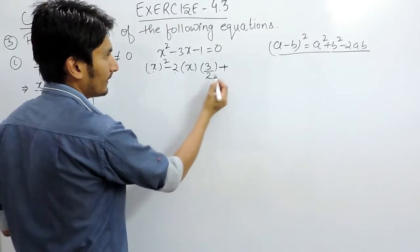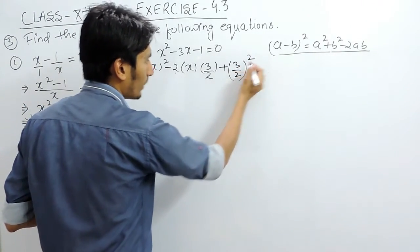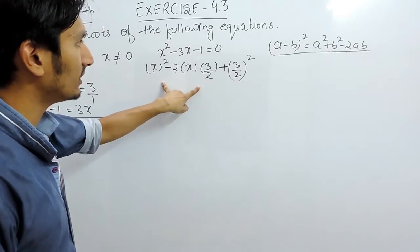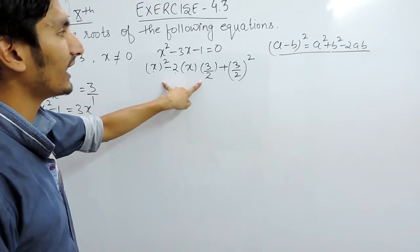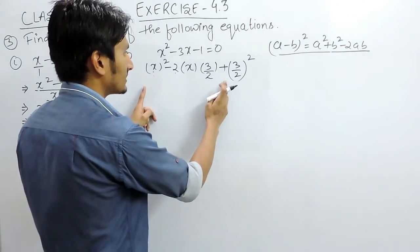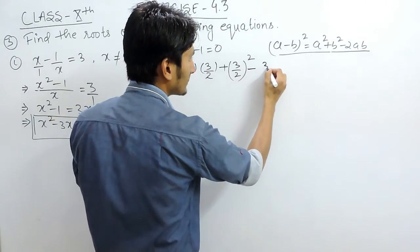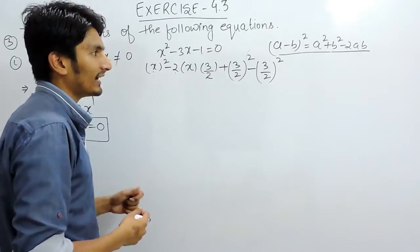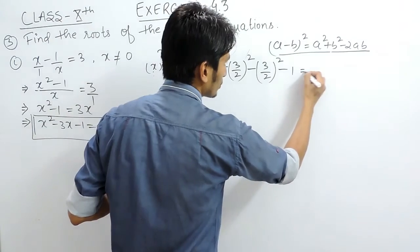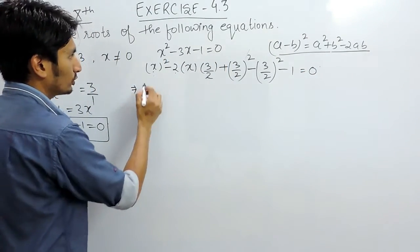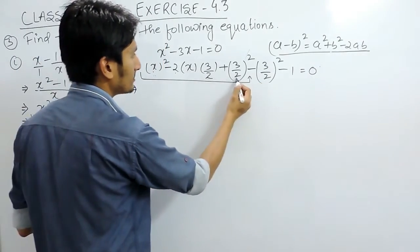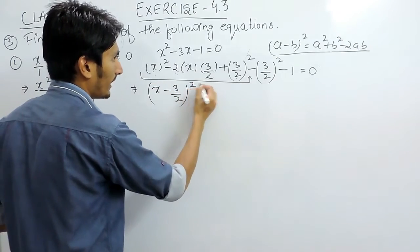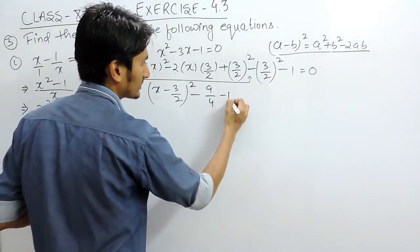The formula says a squared plus b squared minus 2ab equals (a minus b) squared. We can't just add something to the expression without subtracting the same value, so that the overall value remains unchanged. We add and subtract (3/2) squared. This gives us (x minus 3 upon 2) whole squared, plus 9 upon 4, minus 1 equals 0.